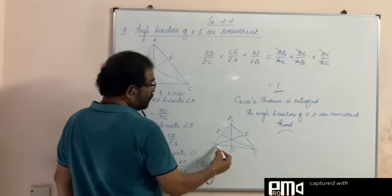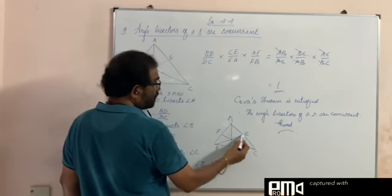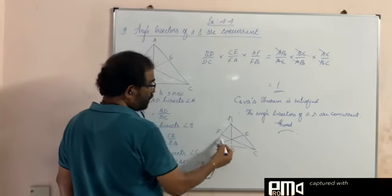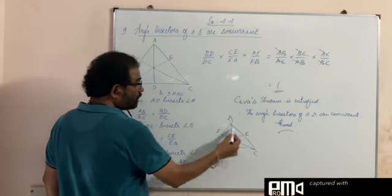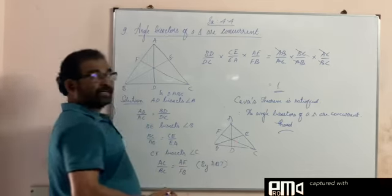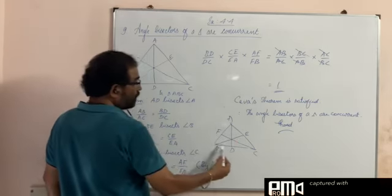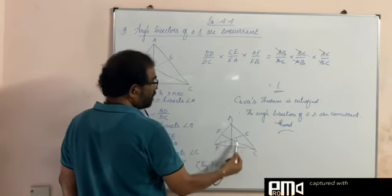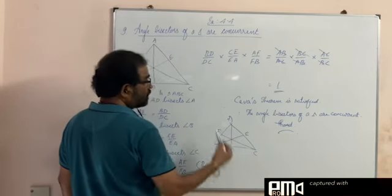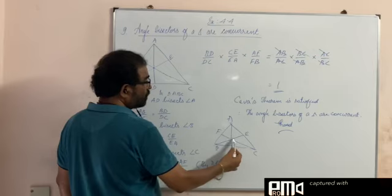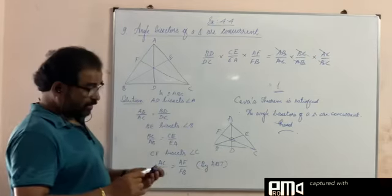If BD by DC into CE by EA into AF by FB is equal to 1, then all these cevians are concurrent. That is Ceva's theorem. The cevians are concurrent, it's passing through the same point.